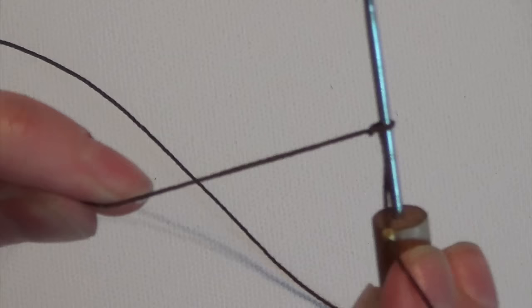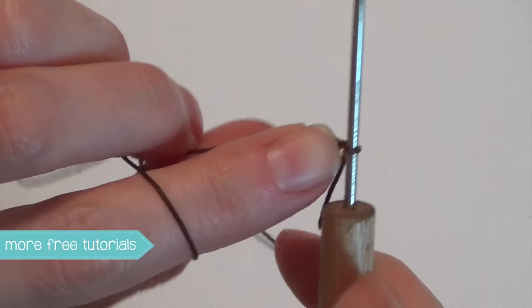So we're going to pull on the loose end of the cord until that knot gets nice and tight up against the bead and pull it really tight. And then using your thumbnail,